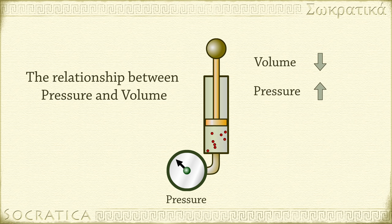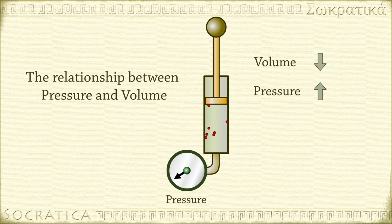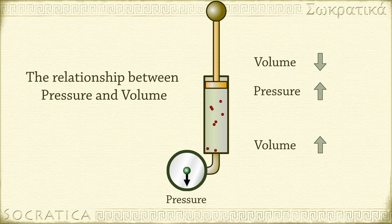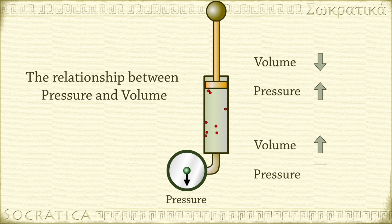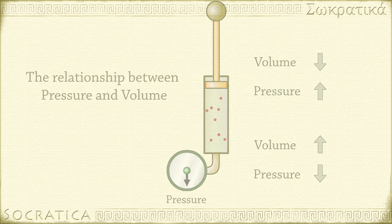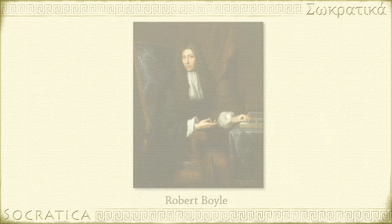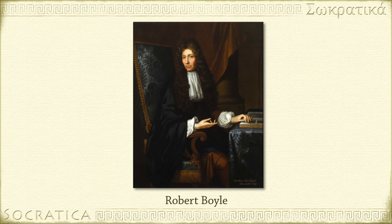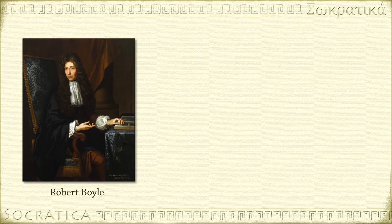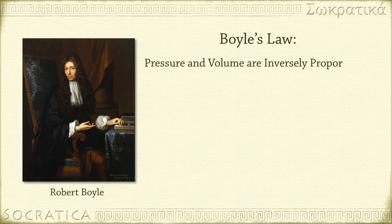If you keep the amount of gas particles constant but make the size of the container bigger, there will be fewer collisions per second with the sides — that registers as lower pressure. Robert Boyle stated the inverse relationship between pressure and volume as a gas law. Boyle's law says that for a given amount of gas, at fixed temperature, pressure and volume are inversely proportional.